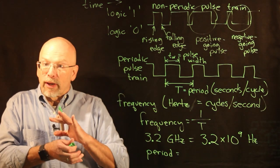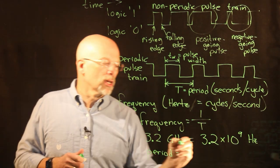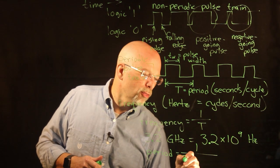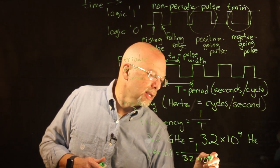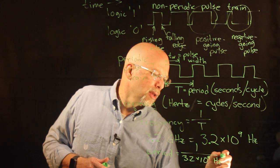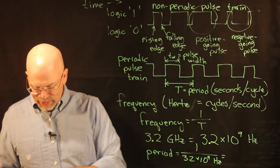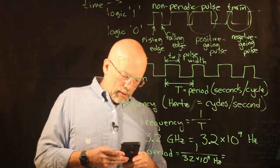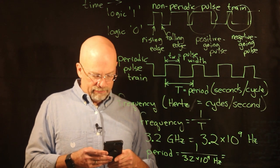If we want to figure out what the period is for this particular device, all we have to do is invert it. So we invert 1 over 3.2 times 10 to the 9th hertz, and this gives us—let's figure this out.